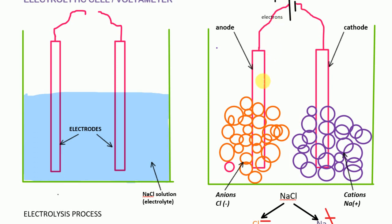After the electron given by Cl⁻ reaches the battery, it travels through the battery towards the cathode. At the cathode we have Na⁺. Na⁺ is positively charged because it is deficient of one electron — it needs one electron. So this electron lost by the Cl⁻ ions will be taken up by the Na⁺ ions at the cathode.